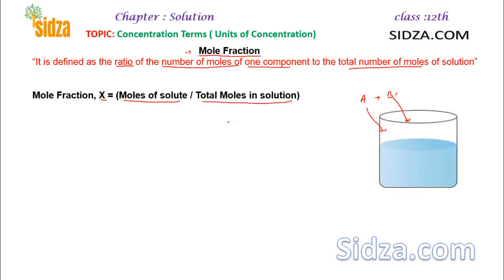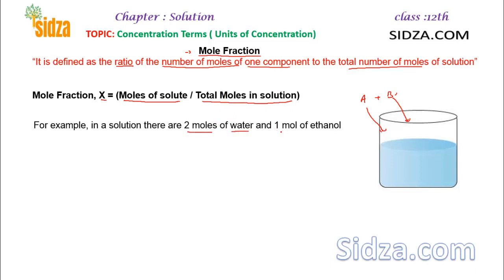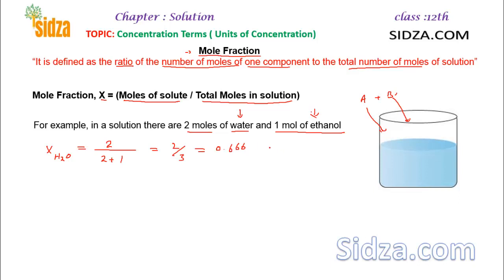Let's take an example. Suppose we have a solution in which two moles of water are mixed with one mole of ethanol. What will be the mole fraction of water? The mole fraction of water will be the number of moles of water, which is two, divided by the total number of moles — that is two moles of water plus one mole of ethanol — so this is 2/3, which equals 0.666. This is a unitless quantity, since it is the ratio of two similar components.